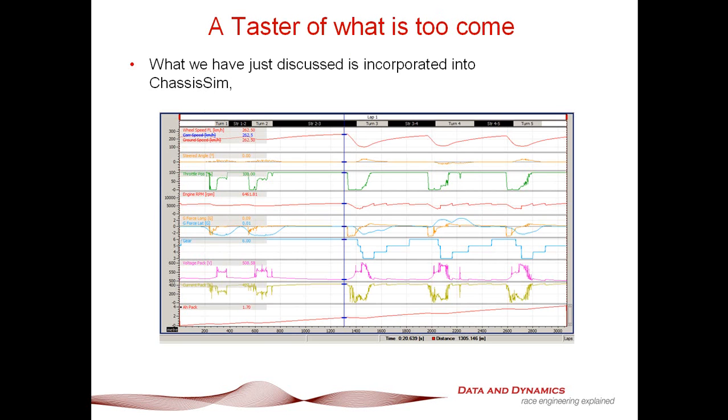A taster of what is to come. As I've indicated in this tutorial, electric powertrains are now incorporated into ChassisSim, and we now have customers in Formula E. So, here's a taster of what's basically out there right now with ChassisSim. As you can see, you've got all the standard ChassisSim variables, which is speed, steer, throttle, et cetera.